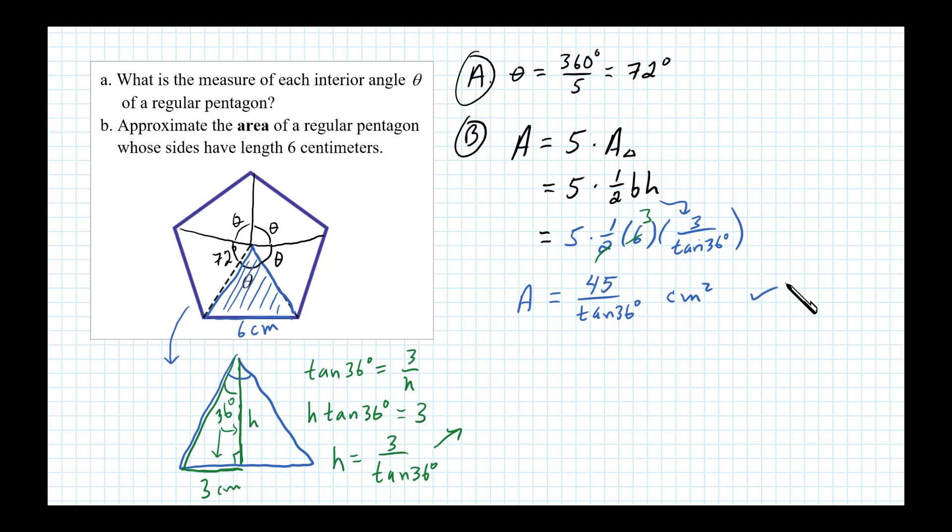All right, so that's the exact value. Now the problem wanted us to approximate that. We'll approximate that to one decimal place. So on a calculator I get 61.9, so 61.9 square centimeters. And that's the answer I'll present: 61.9 square centimeters.